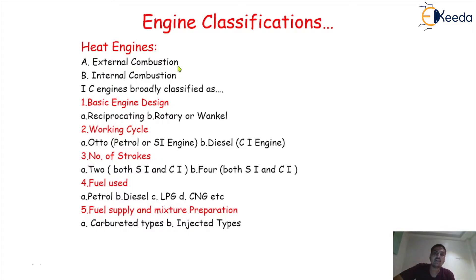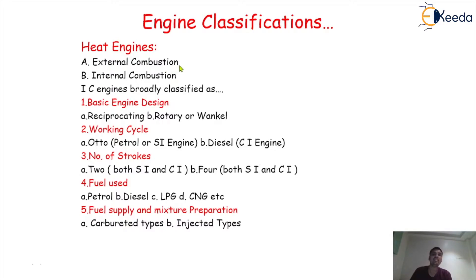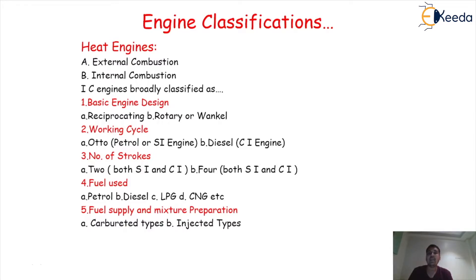If you concentrate on this, in the case of a steam power plant, we are using two motive fluids. What are those two motive fluids? One is coal and another one is water. In the case of an external combustion engine, the combustion is done externally, where two motive fluids are utilized for the generation of the final output. First, we have to burn the coal, and that coal's heat energy is transferred to the water. Then water converts into steam, and we can use that steam to force on the turbine blade.